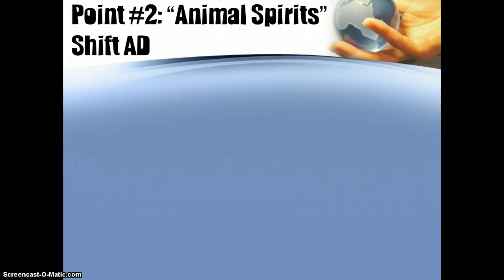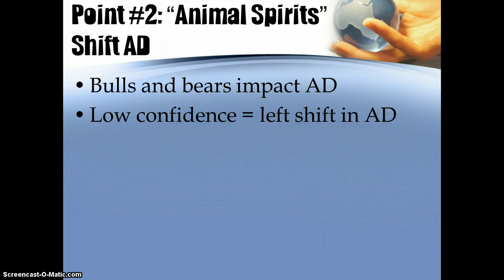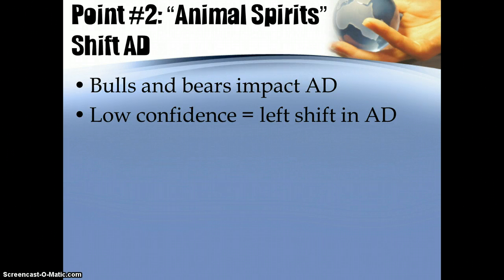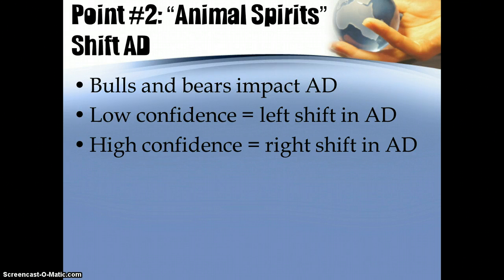Keynes also talked about the idea of animal spirits and how those affect aggregate demand, giving us the concept of bulls and bears. If you're bearish, you have low confidence in the economy, and that generally leads to less consumption, less investment, and a leftward shift in aggregate demand. If you're a bull, you have high confidence in the economy, and it leads to a rightward shift in aggregate demand. People's expectations, feelings, and confidence have a direct effect on output in the country.